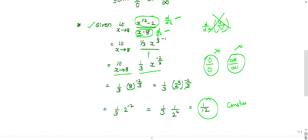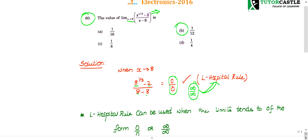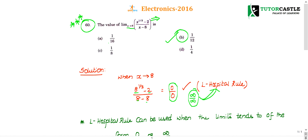You can terminate here and this is the final value of the limit. The right choice is 1 by 12, so the choice is option B. This is a very simple question. It hardly takes 30 seconds to finish if you have an idea of hospital rule. If you have any queries, post them in the comment box and subscribe to the channel for getting more updates.